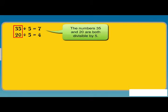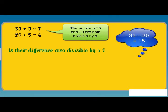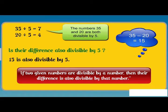The numbers 35 and 20 are both divisible by 5. Let us see if their difference is also divisible by 5. 35 minus 20 is equal to 15. 15 is also divisible by 5. This implies that if two given numbers are divisible by a number, then their difference is also divisible by that number.